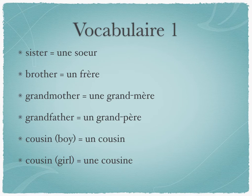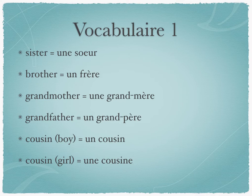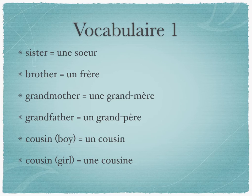We add an e to make words feminine. So we take our boy cousin: un cousin, with a nasal sound at the end. When we add an e onto the end to make it feminine, that's going to take that nasal sound and make it no longer nasal. Remember, an e on the end of nasal combinations makes them not nasal anymore. So we go from un cousin with two nasals to une cousine with no nasals whatsoever.